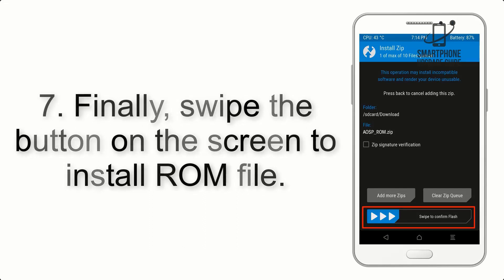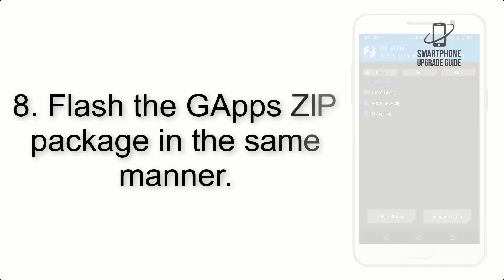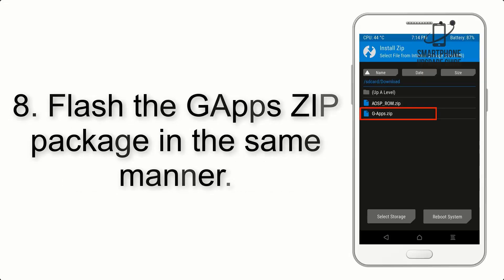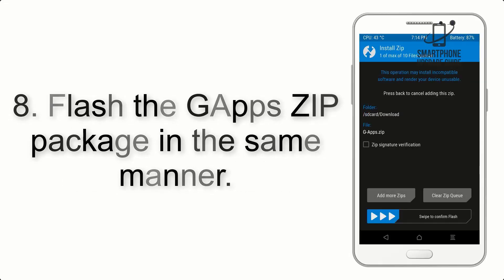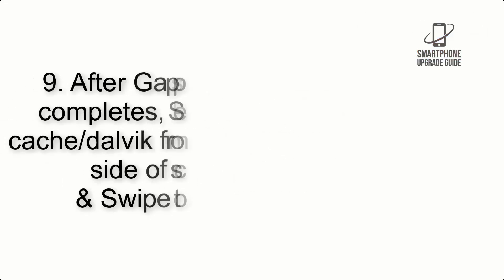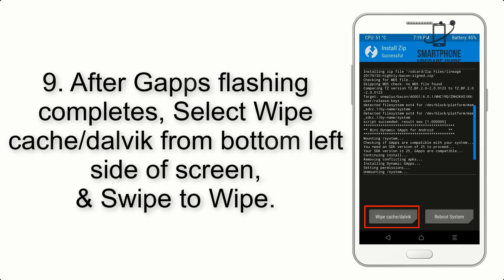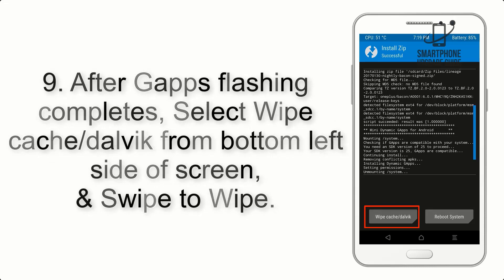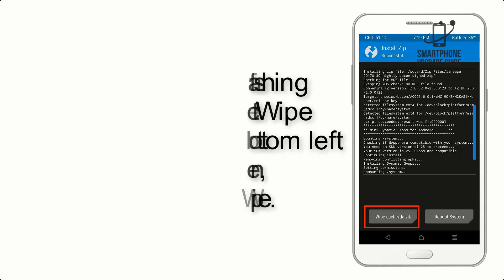Step 7: Swipe the button on the screen to install the ROM file. Step 8: Flash the GApps zip package in the same manner. Step 9: After GApps flashing completes, select Wipe Cache and Dalvik from the bottom left side of the screen and swipe to wipe.